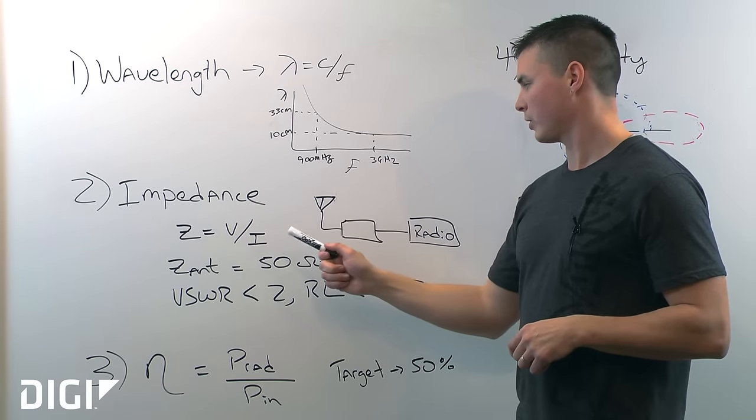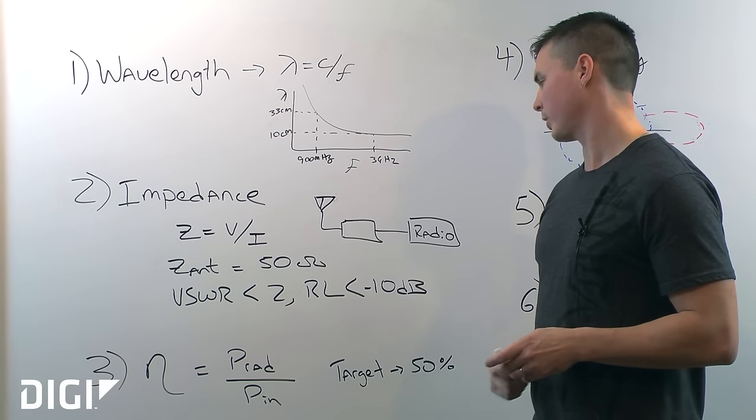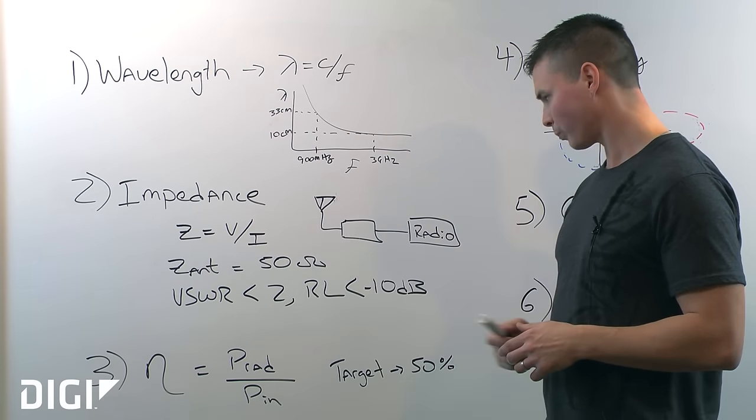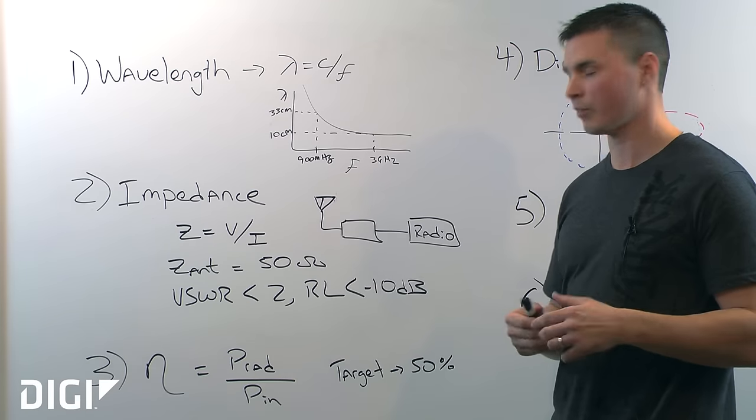Antenna impedance is defined as the voltage over the current at the antenna input terminals. Now most data sheets are going to tell you that their antenna is 50 ohms, which is really not the case. And that's why there's metrics to define how well the antenna is matched to 50 ohms.